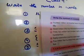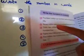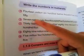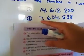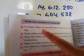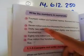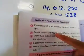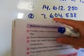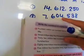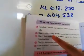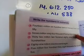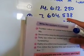Doosra number hai: seven million sixty four thousand five hundred and thirty eight. Yeh dekhe — seven million, sixty four thousand, five hundred and thirty eight.